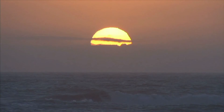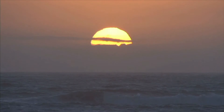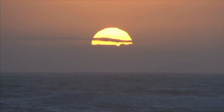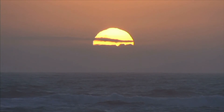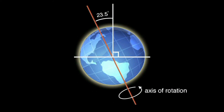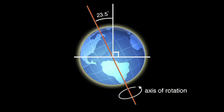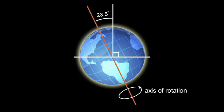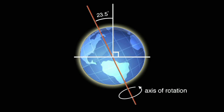Now that you better understand solstice, think about this: what would happen if the Earth wasn't tilted 23.5 degrees? We'll be right back.